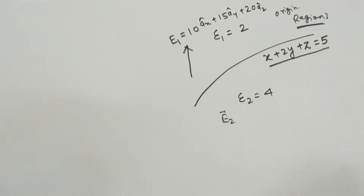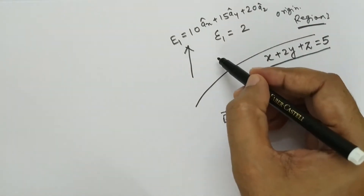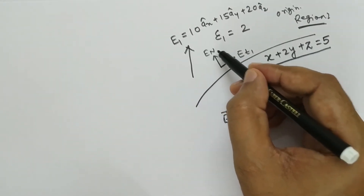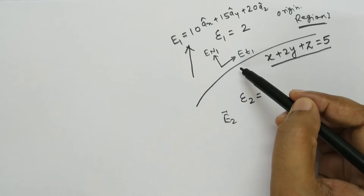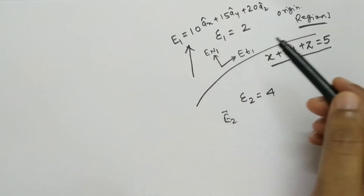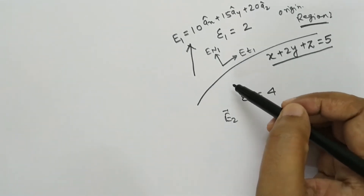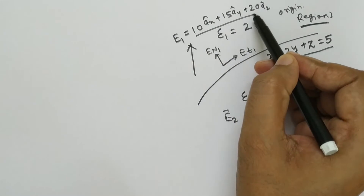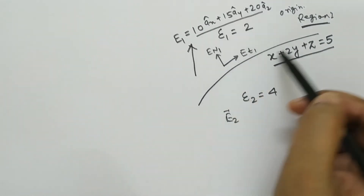To do this, first of all we have to find out the normal component and the tangential component of the electric field, because we have the relation in terms of either tangential electric field or normal electric field. The tangential electric field is continuous at the boundary, and the normal component of electric flux density — DN1 equals DN2 — is also continuous at the boundary. For that, we should know the normal vector and tangential vector for this particular boundary.